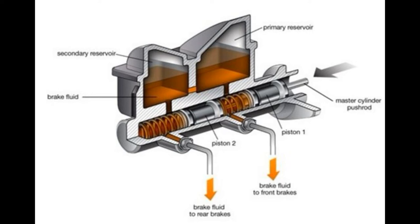Fourth, the returning spring: it is a simple coil-type spring used inside the cylinder that helps the piston and brake pedal to return to their original position after the brake pedal is released. Fifth, the valve: in a single circuit MC, it is the outlet valve through which the brake line is attached, and the compressed brake fluid is further transferred to the caliper through this valve.